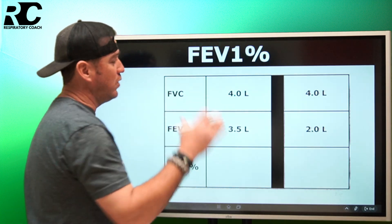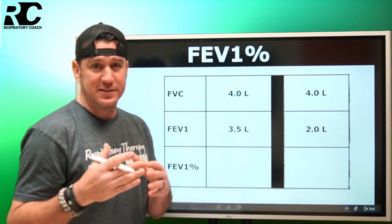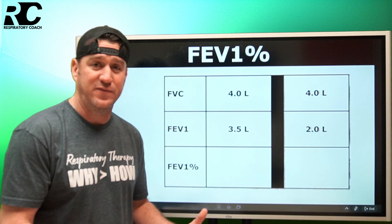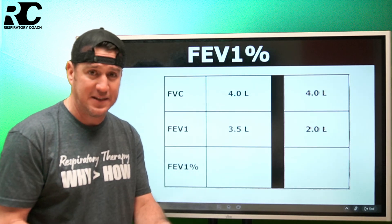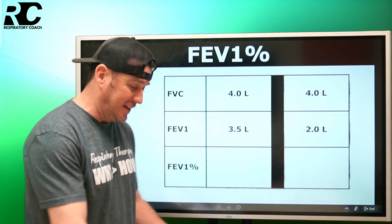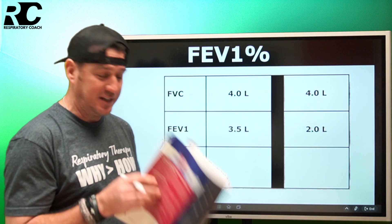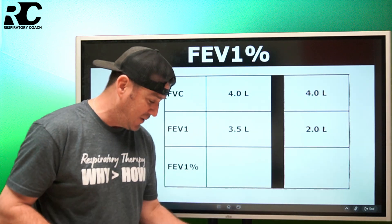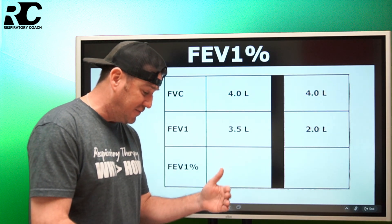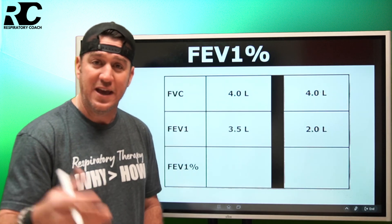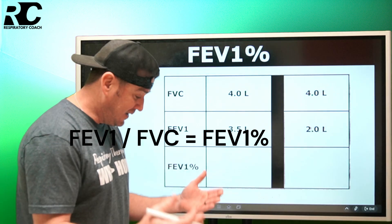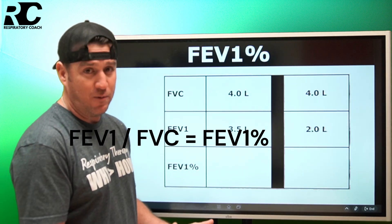When we talk about the FEV1%, this is going to be a calculation that you may or may not have to do. You may be given what that FEV1% is, or you may be given the values that you need to calculate. If we go to Egan's 13th edition, chapter 20, page 398 — it says right here: the forced expiratory volume in one second to vital capacity ratio, that's FEV1 divided by FVC, also known as FEV1%, is how you calculate it.